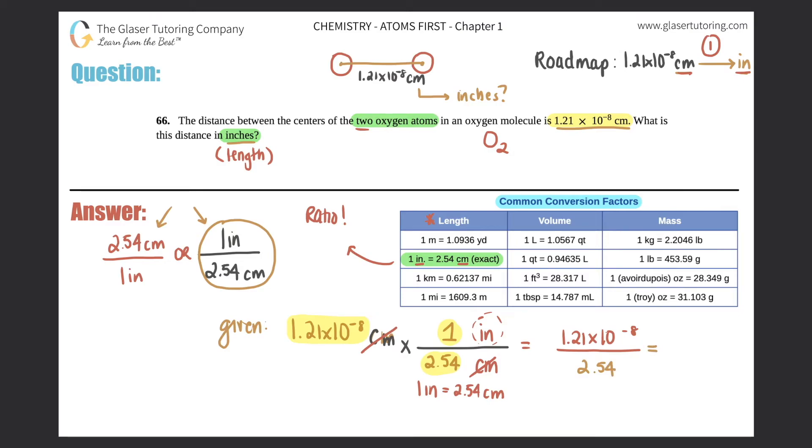So calci time, aka calculator time: 1.21 times 10 to the negative eighth divided by 2.54. Long number. So I'm going to give a few digits, but then I'll cut it off. So 4.76377 times 10 to the negative ninth. Okay. So that's what I get.